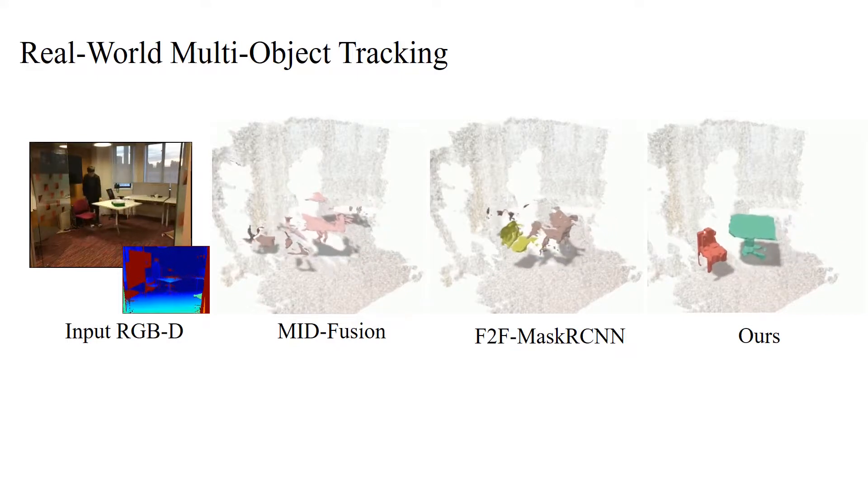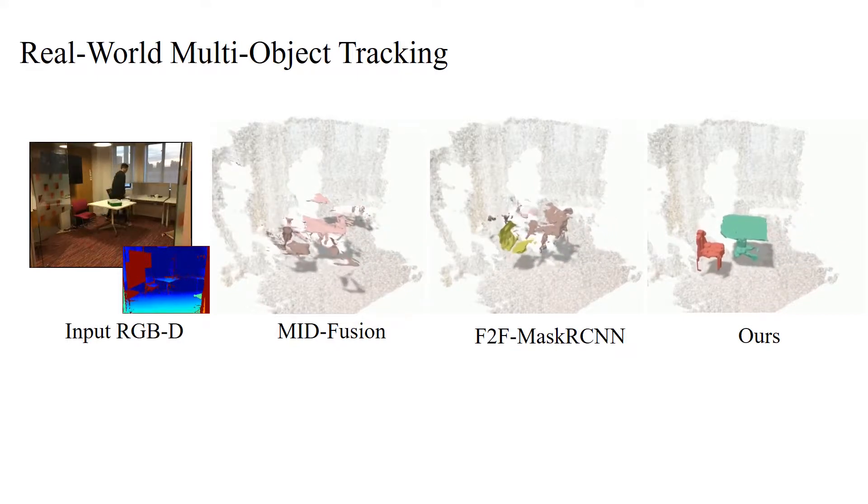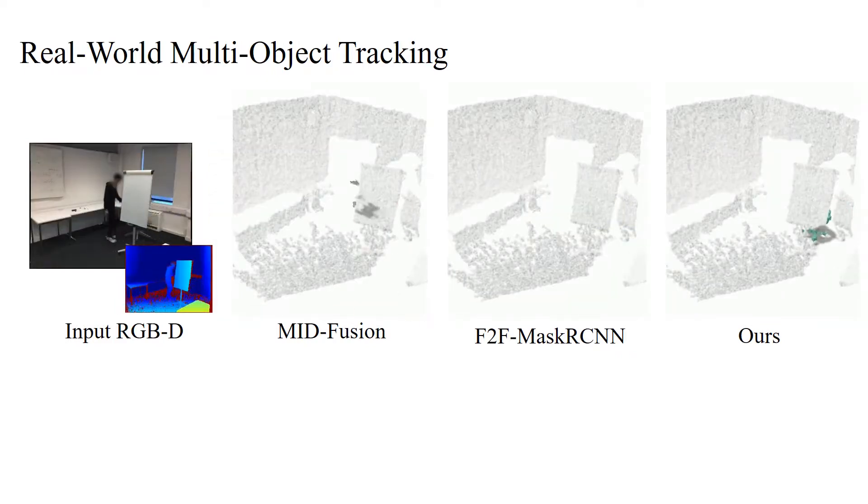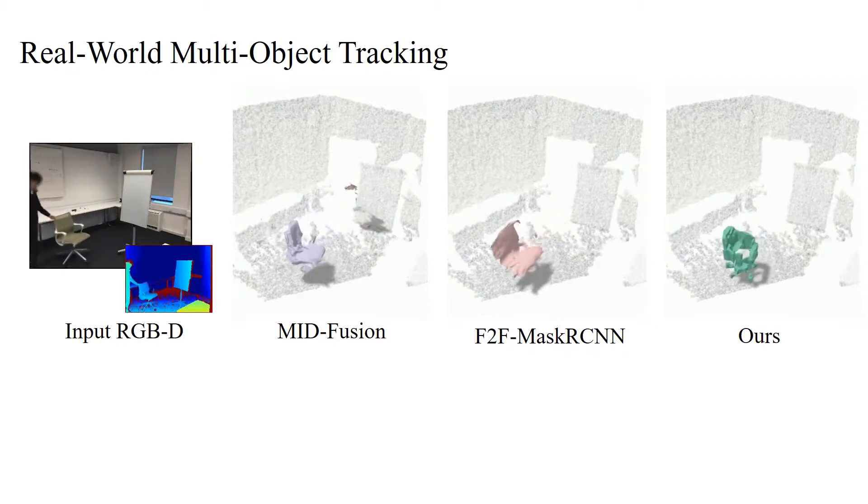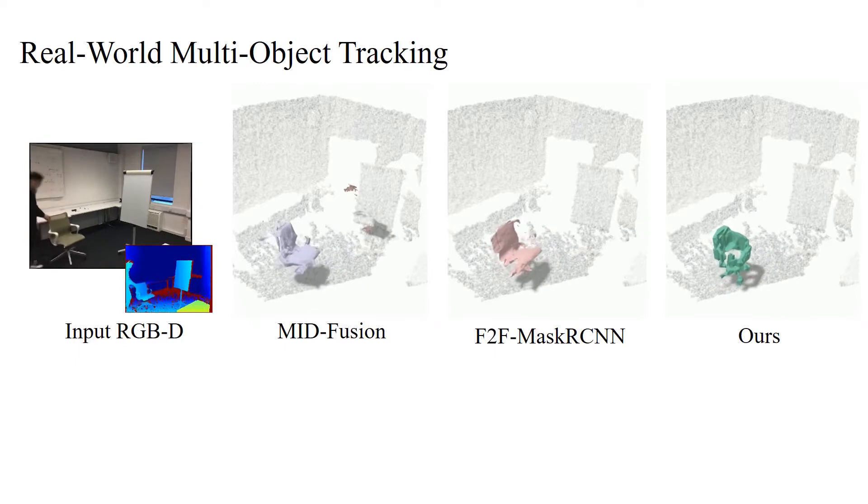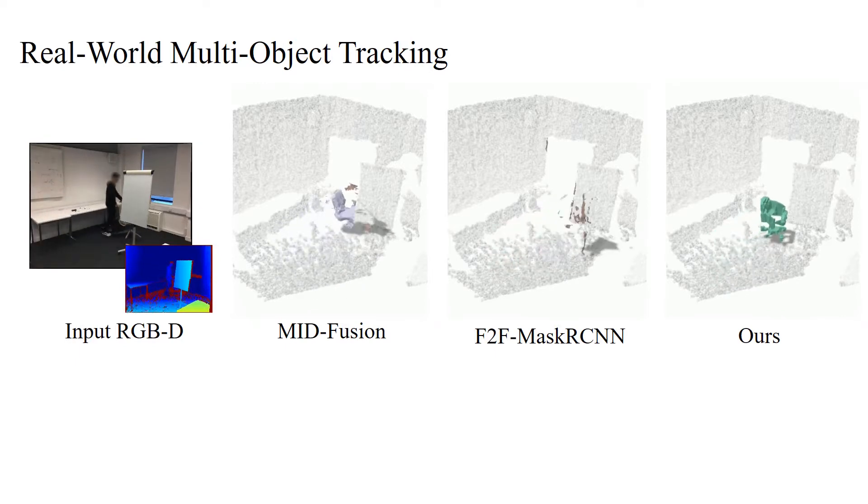Qualitative evaluations show that our method finds persistent correspondences on the predicted complete object geometry, enabling robust tracking even under strong changes in view. As our approach not only integrates observed surfaces but also hallucinates missing object regions, we also obtain representative object shapes.